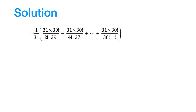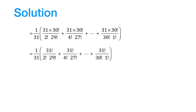Let us now multiply and divide each term of the above series by 31. So, the series now looks like this. Now, 31 times 30 factorial is equal to 31 factorial. Therefore, this series can be written down like this.